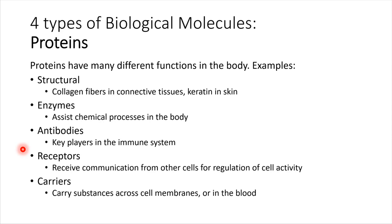Just to give some examples of protein functions: definitely some proteins are structural — for example, in connective tissue, lots of collagen fibers are protein, and they help to stabilize structures. Other proteins work as enzymes, which facilitate chemical reactions. Other proteins act as antibodies — we will talk about these when we get to the chapter on the immune system. Antibodies are a type of protein.